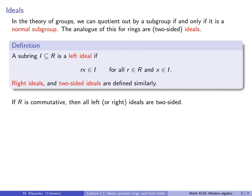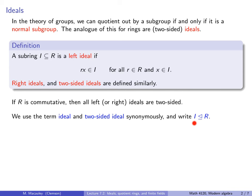If R is commutative — in other words, X times Y always equals Y times X — then all left or right ideals are automatically two-sided. We use the term ideal and two-sided ideal synonymously, and we use the same notation that we do for normal subgroups. So this means that I is an ideal of R.